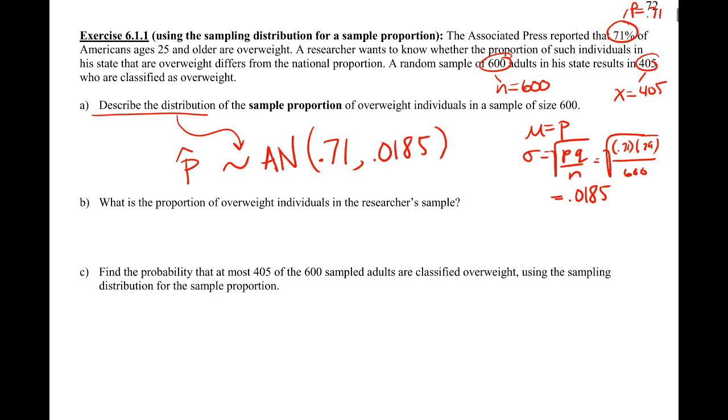Now we have everything. This is basically a full sentence to any stats person. Our sample proportion follows an approximate normal with a mean of 0.71 and a standard deviation of 0.0185.